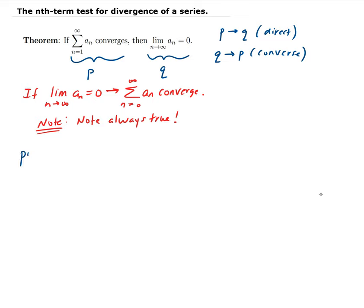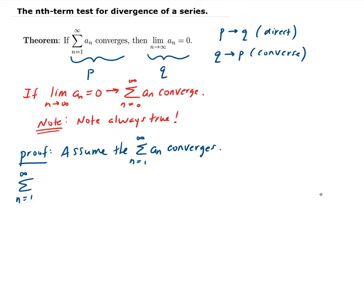We're going to assume that the series converges. So that means, by definition, the limit of the partial sums are converging — they're approaching a finite value. This implies that the limit of the partial sums S_N is converging to L, where L is finite.